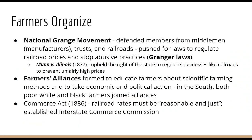In response to this, we see the organization of farmers. The National Grange Movement was essentially created to defend members from the bad actions of the middlemen, the manufacturers, the trusts, and the railroads. The Grange movement pushed for laws to regulate railroad prices and to stop these abusive practices, and these laws were called Granger laws. A big example of this was Munn versus Illinois in 1877, where the Supreme Court upheld the right of the state to regulate businesses like railroads to prevent unfairly high prices.